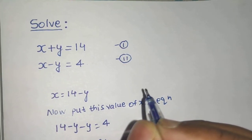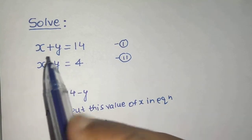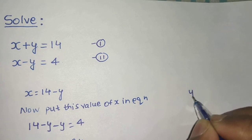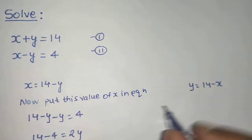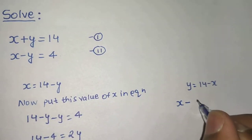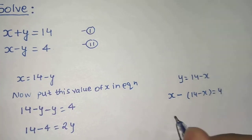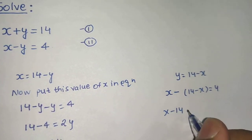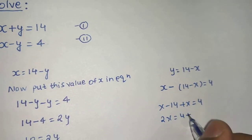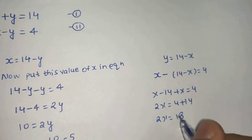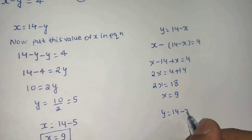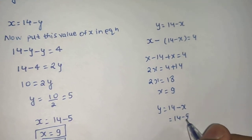The basic concept of substitution method is to take either the value of x or y. You could have taken the value of y also — so y equals to 14 minus x. If you put this in the second equation, x minus (14 minus x) equals to 4, giving x minus 14 plus x equals to 4, so 2x equals to 18, and x equals to 9. Then y equals to 14 minus 9, which is 5.